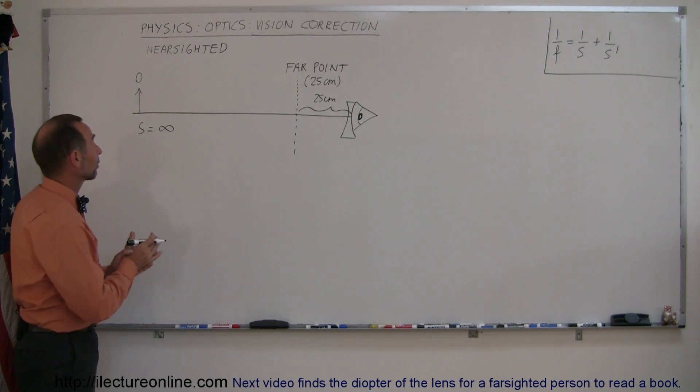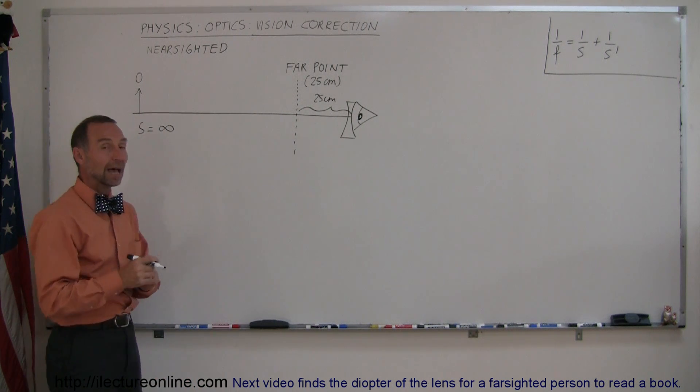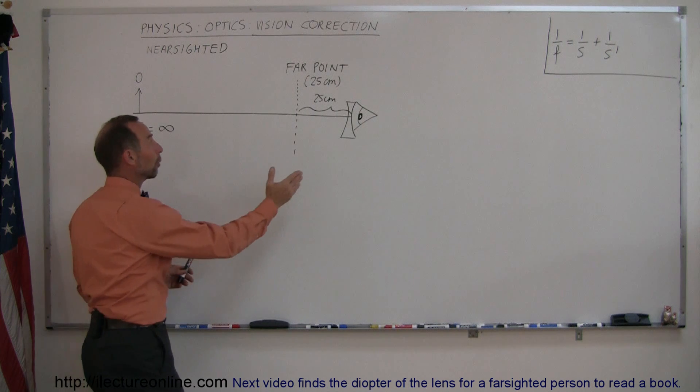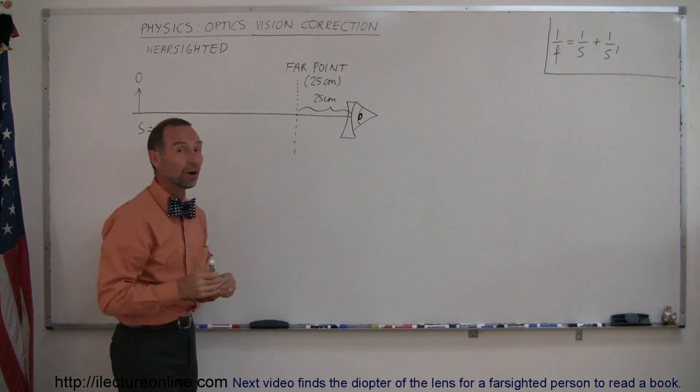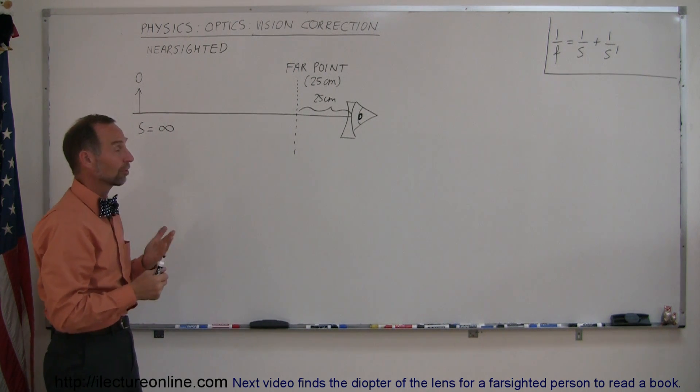In our next example of how to correct nearsightedness, we have a person here who has a far point of 25 centimeters. A far point is the farthest point that this person can see clearly.